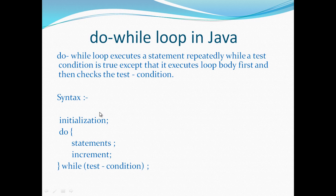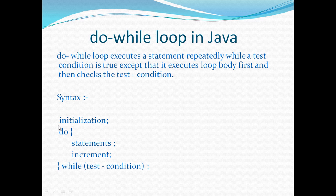How this loop works: first we initialize the loop control variable, which decides the number of times the do-while loop will be executed. The flow then goes into the do block of code, where the statement is executed. Then it increments the loop control variable. After modifying the loop control variable, it goes to the 'while' and checks the test condition. If the test condition is true, the flow of control goes back into the do block. This continues until the test condition comes out to be false, at which point the do-while loop is terminated and whatever steps come after it are executed.